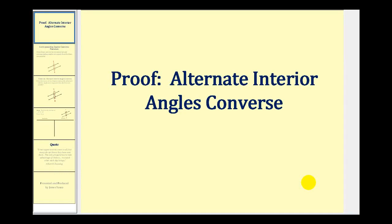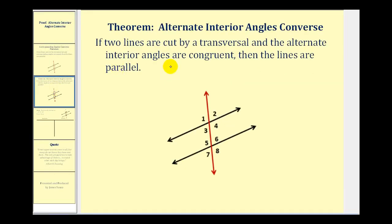Welcome to a proof of the alternate interior angles converse. This theorem states that if two lines are cut by a transversal and the alternate interior angles are congruent, then the lines are parallel. So we want to prove that if angle three is congruent to angle six, or angle four is congruent to angle five, we have parallel lines.